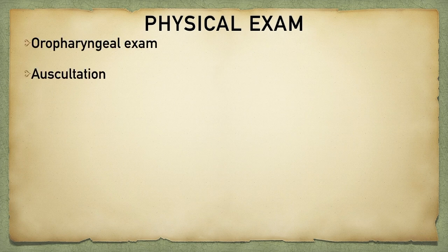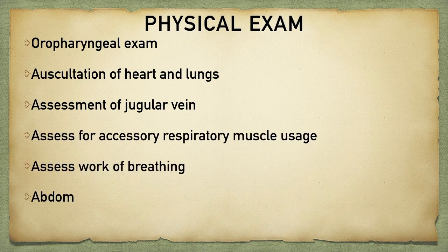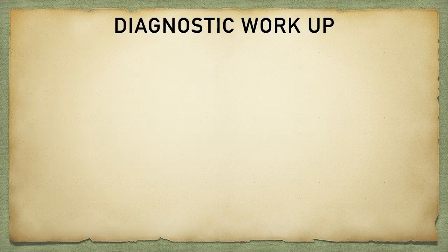Now that the history is complete, you're going to perform a thorough physical examination. This involves more than just listening to the heart and lungs. In addition to auscultation, look at the oropharynx and the patient's jugular veins. Things that can cause jugular venous distension include pneumothorax from increased intrathoracic pressure, cardiac tamponade, and heart failure, to name a few.